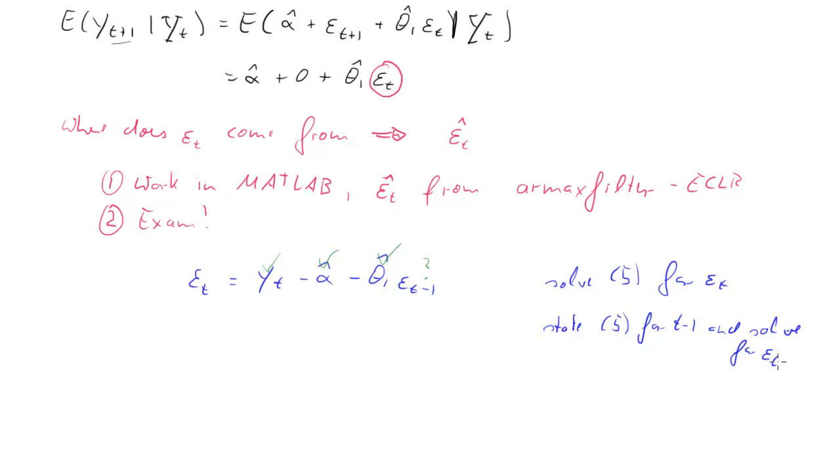What we then get is epsilon_t-1 equals y_t-1 minus alpha hat minus theta 1 hat times epsilon_t-2. Okay, in the same dilemma, of course, we have this, we have this, we have this, but we don't have this. So you can see how this will now—we can do this again and again. First, you may think, well, you know, doing it once didn't deliver a solution; doing it twice didn't deliver a solution. Why should doing it more often deliver a solution?